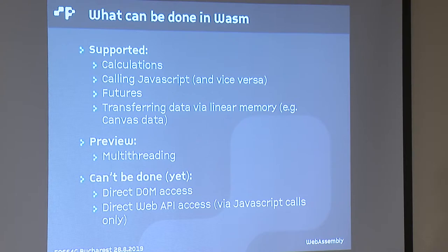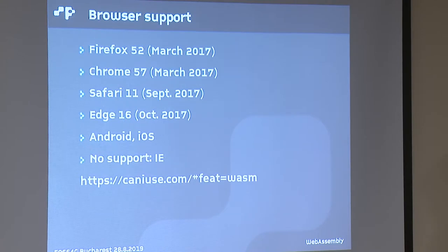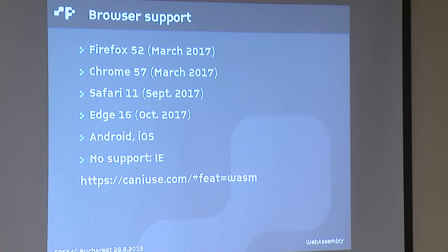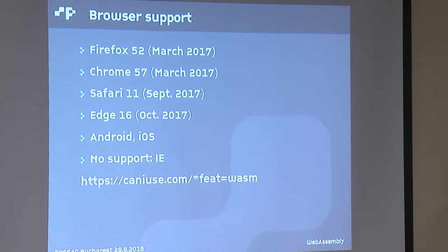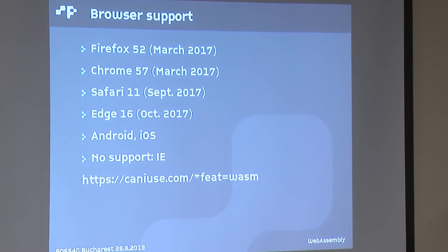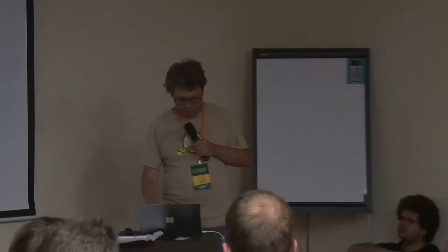In this first version we have this first set of features and the rest is coming. Browser support looks very good — all major browsers supported WebAssembly in 2017, including Android and iOS. The only one that doesn't support WebAssembly is Internet Explorer, which is not a big problem anymore. We still have the ASM.js fallback. There is also a polyfill so you can use the same WebAssembly binary, load it from JavaScript, and execute it — though slowly — or even do on-the-fly transformation to ASM.js.